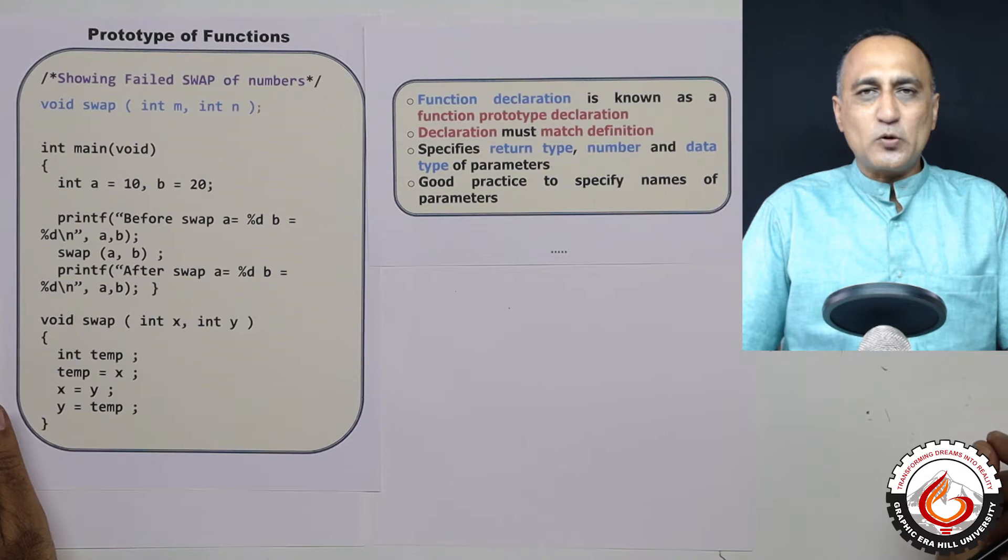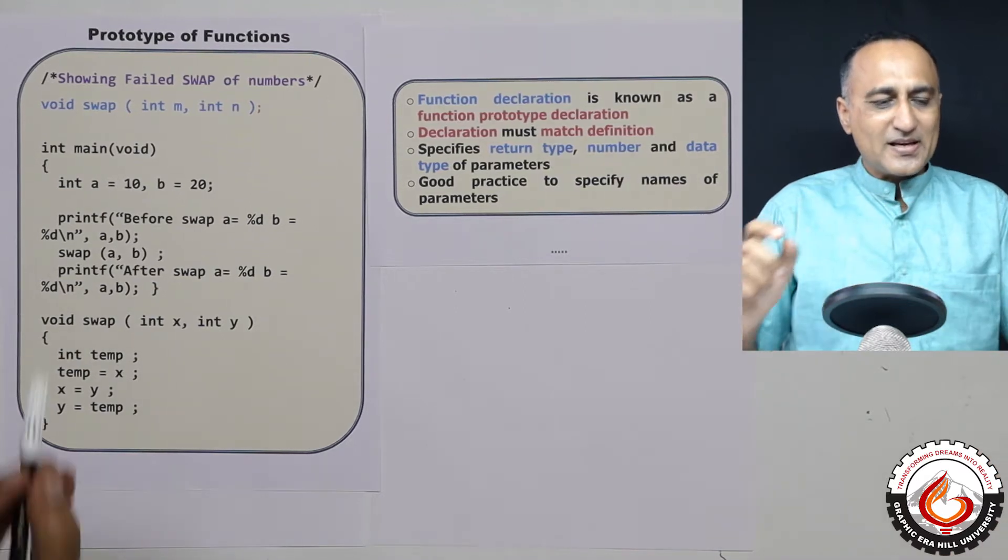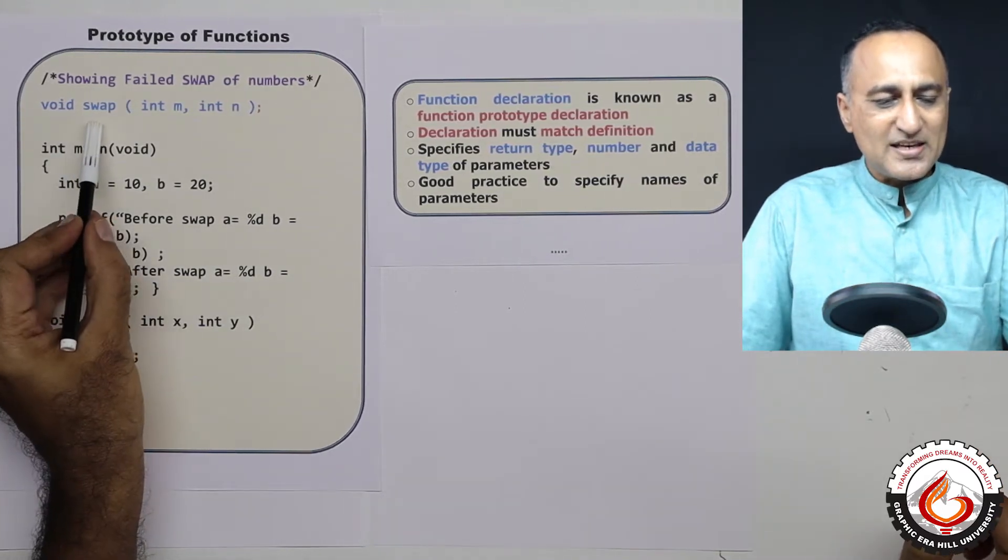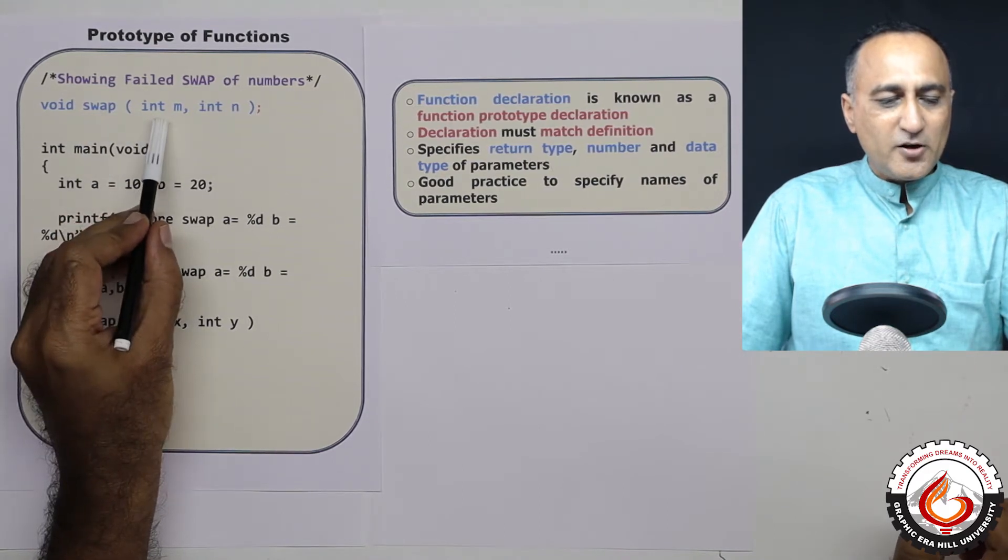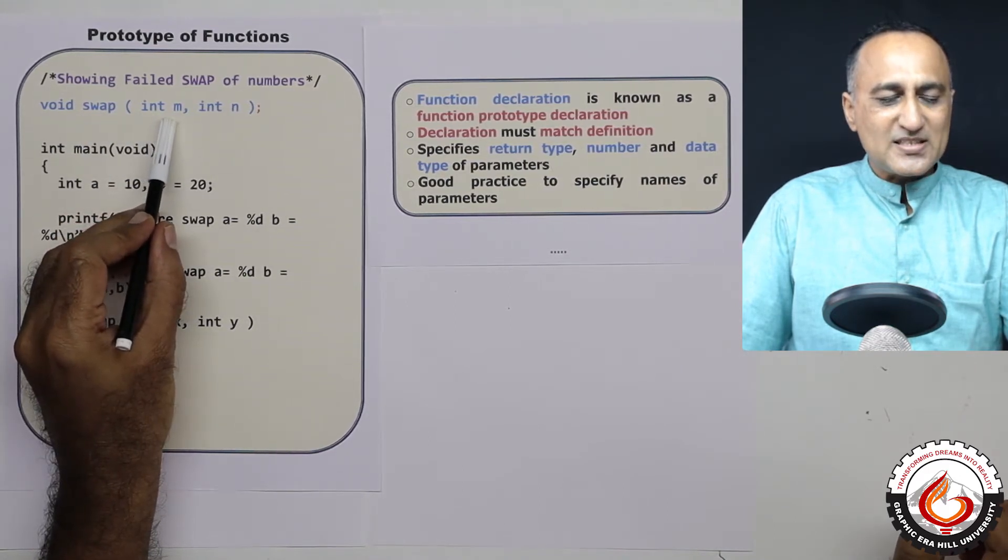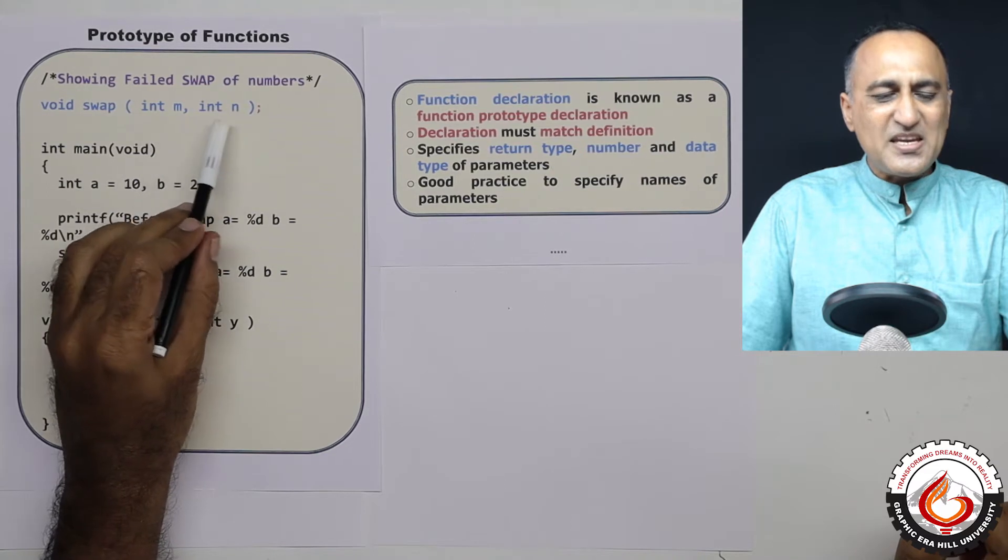All that the function prototype really does is say, for example, I have a function called swap. I am accepting two integer variables, one let's say m and n, they can be any names.